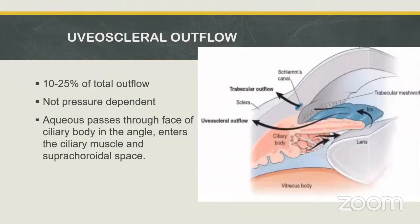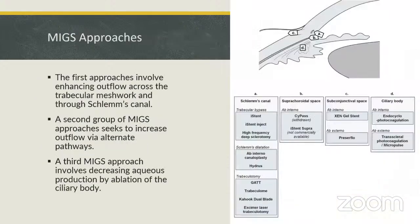Uveoscleral outflow accounts for about 10 to 25% of total outflow and is not pressure-dependent. Aqueous passes through the face of the ciliary body in the angle, enters the ciliary muscle and the suprachoroidal space.